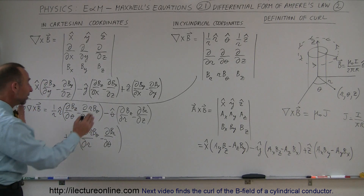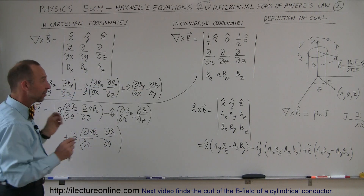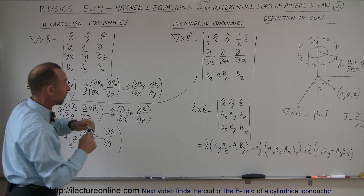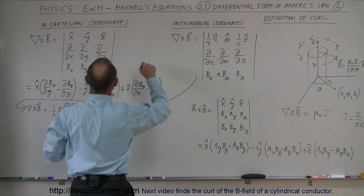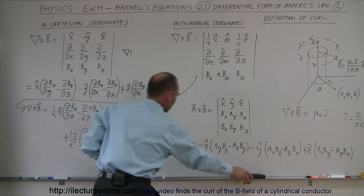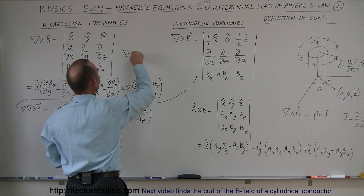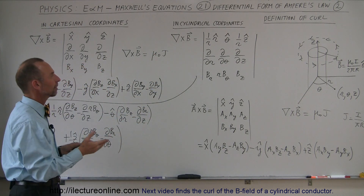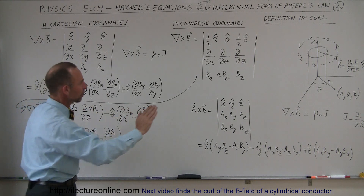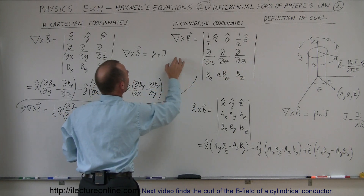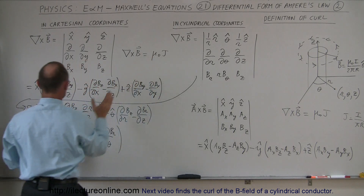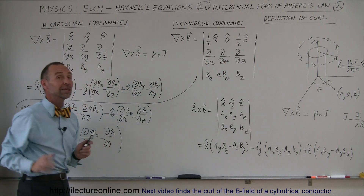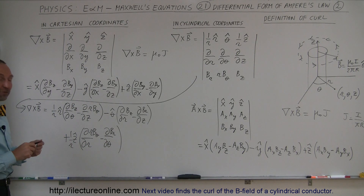In the next video, we're going to take this and actually apply it to a real example, and see how we take the curl of the B field and how that fits into the differential form of Ampere's law: the curl of B equals mu sub-naught times the current density J, plus mu sub-naught times epsilon sub-naught times the changing electric flux over time. We're going to ignore that second part — the displacement current — which is not present in this situation. We'll show how the curl of B in cylindrical coordinates equals mu sub-naught times the current density.